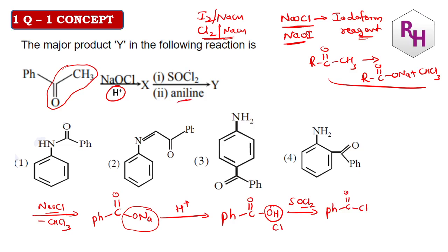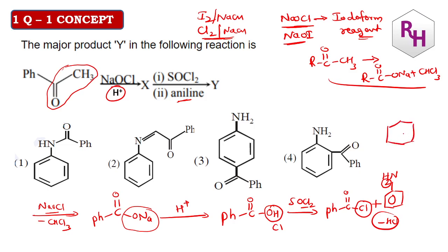Next, this reacts with aniline. When it reacts with aniline, the NH2 group is written here. So when aniline reacts, Cl and H are eliminated as HCl. The compound you are going to get is NHC(=O)-Ph, which is the amide product. So the product is NHC(=O)-Ph, and that is option number one.